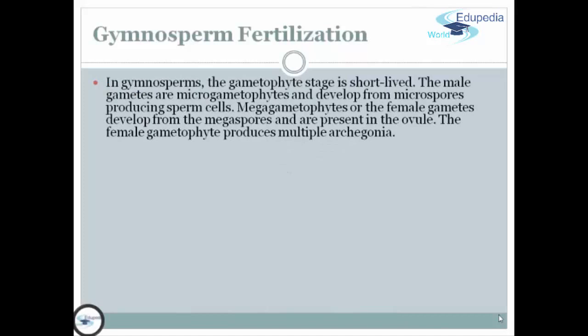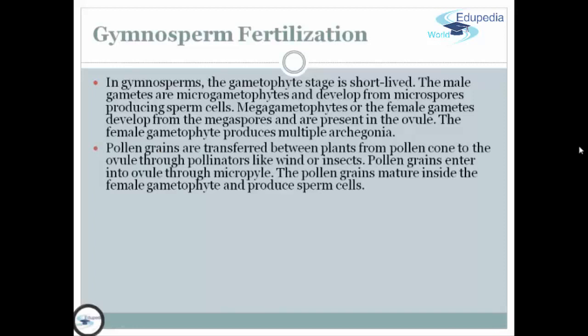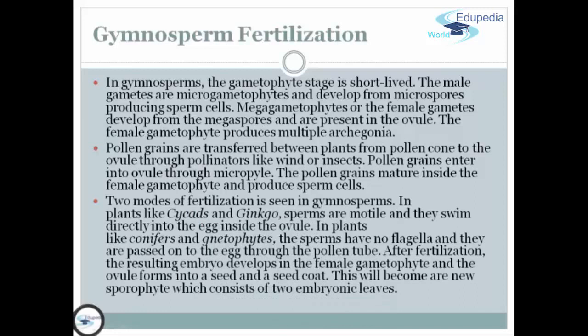Next, we have gymnosperm fertilization. The gymnosperm fertilization process is short-lived. The male gametophytes develop from microspores producing sperm cells. Megagametophytes, or female gametes, develop from the megaspore and are present in the ovule. The female gametophyte produces multiple archegonia. Pollen grains are transferred between plants from the pollen cone to the ovule through pollinators like wind or insects. Pollen grains enter the ovule through the micropyle. The pollen grains mature inside the female gametophyte and produce sperm cells. Two modes of fertilization are seen in gymnosperms.